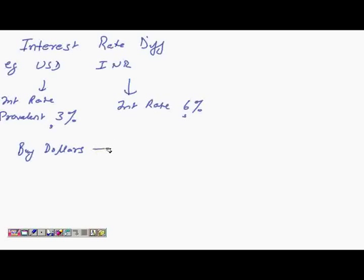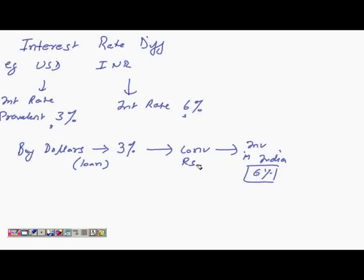Convert those dollars into INR and invest in INR, which will fetch you a return of say 6%. So you're buying dollars on loan in the US at 3%, even if you're taking a loan, you only have to shell out 3% to buy those dollars, then convert it into rupees and invest in India, gaining at 6%.